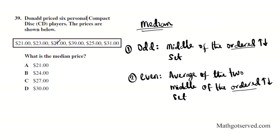Let's take a look at this example. How many elements do we have in this set? One, two, three, four, five, six. So it's going to be even. So let's order this set, we have 21, 21, 23, 25, 31, and 39.